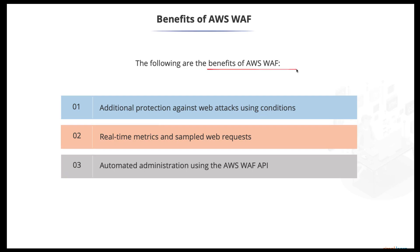There are multiple benefits of using WAF, including additional protection against web attacks using multiple conditions. We can define conditions based on the IP address that requests originate from, the country of origin, values in request headers, specific strings or strings matching regular expressions, the length of requests, the presence of SQL code that is likely to be malicious, and the presence of script that is likely to be malicious, such as cross-site scripting.